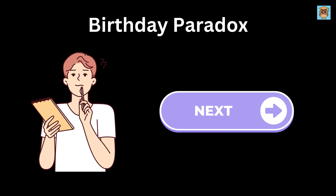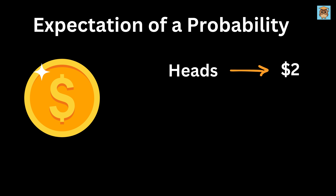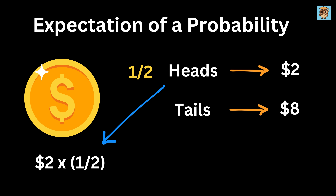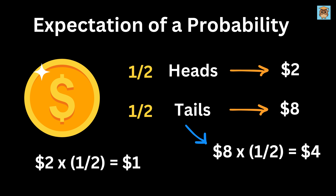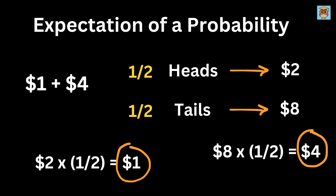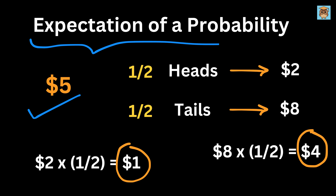Before understanding the next counterintuitive problem, let me tell you what an expectation of a probability is. Suppose you flip a fair coin. You win $2 if it lands on heads, and $8 if it lands on tails. What is the average amount you should expect to win? The chance of getting heads is 1 out of 2, and winning $2 gives 2 times 1 divided by 2, which equals $1. Adding both results: 1 plus 4 equals $5. So on average, you should expect to win $5 per flip, even though you never actually win exactly $5 in a single flip. This is called the expected value of the game.